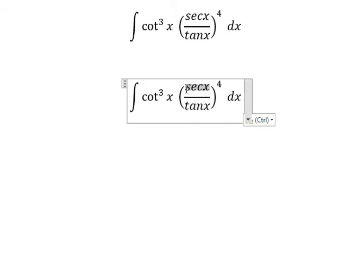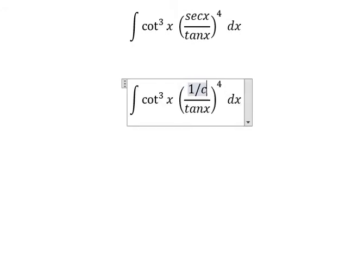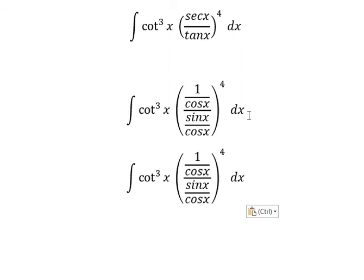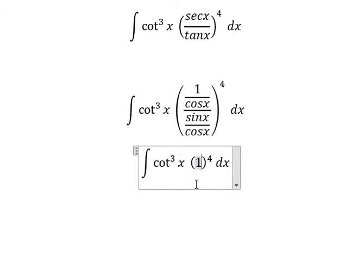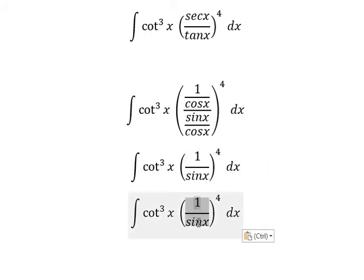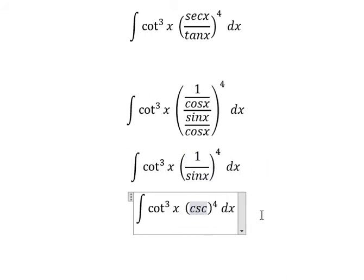Secant of x, we change to 1 over cos x. Tan x, we change to sine x over cos x. Cos x divided by cos x gives us 1 over sine x. And we know that 1 over sine x equals cosecant of x.